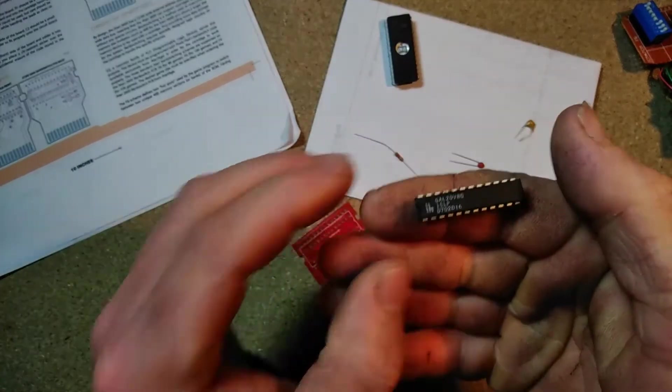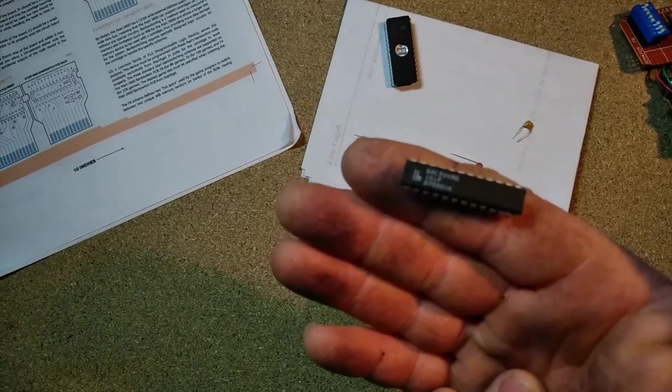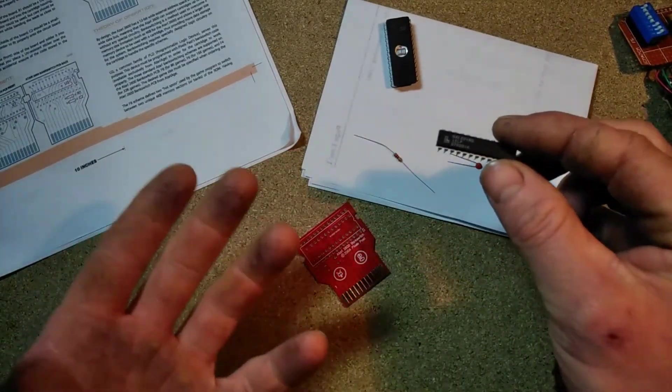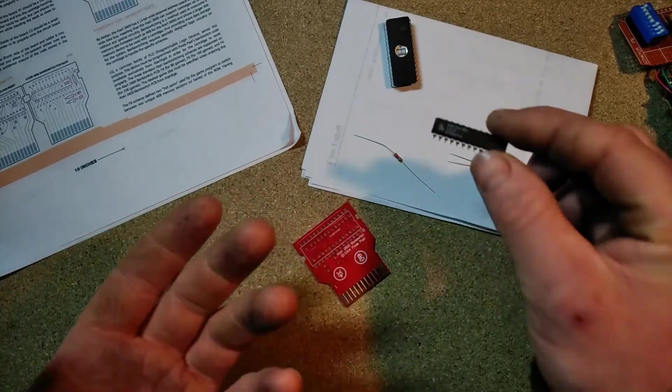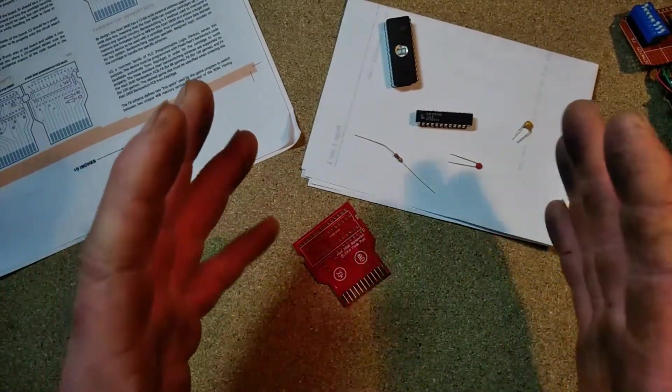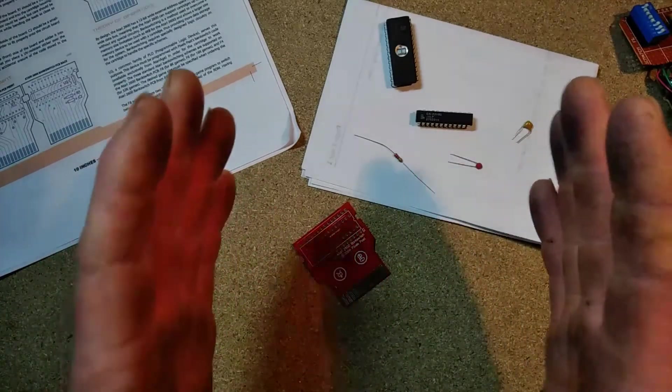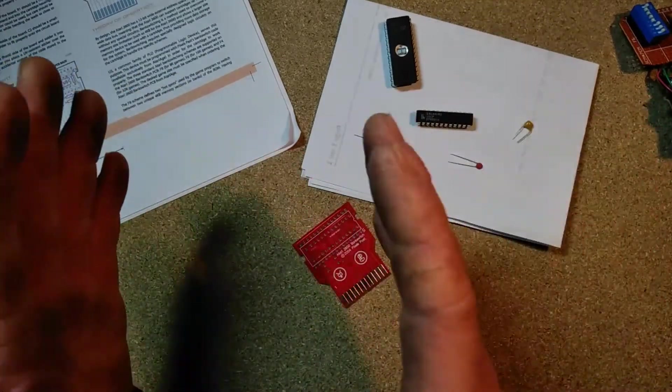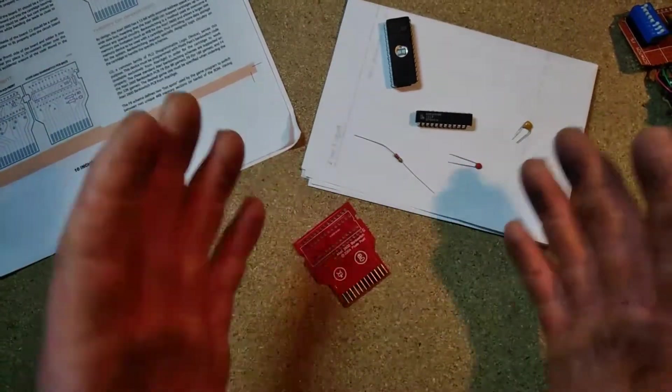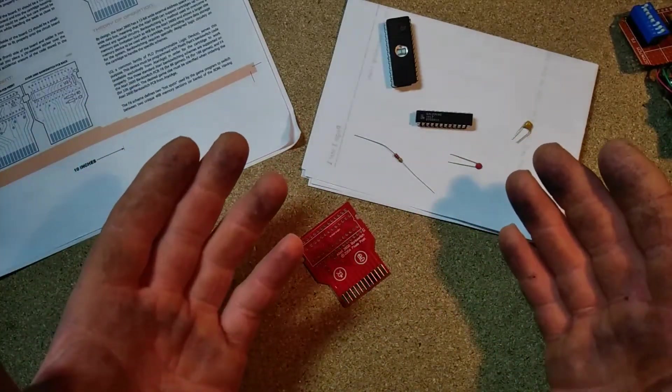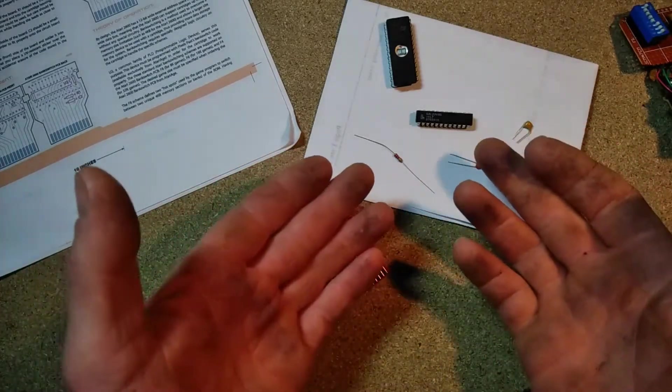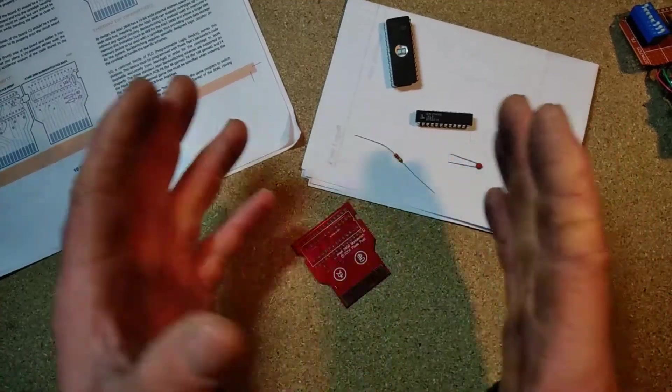It effectively creates the bank switching. As the Atari can only see a 4-kilobyte block of memory or bank, with an 8-kilobyte game for example, that little chip will effectively cut it into two slices of 4 kilobytes each. As the Atari needs to, it'll present whichever 4-kilobyte block or bank that the Atari needs to read next. That's pretty much how they get around that limitation.